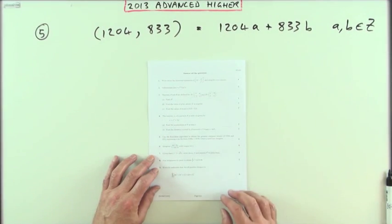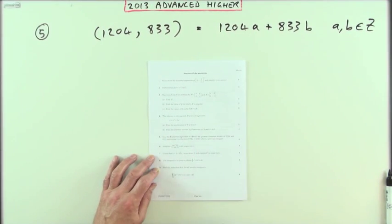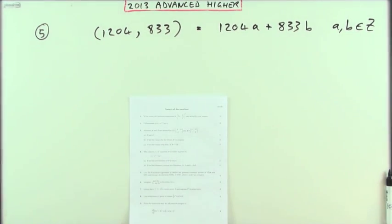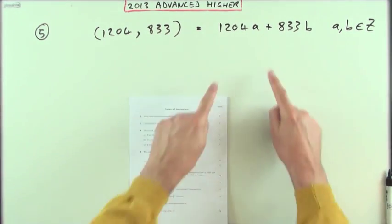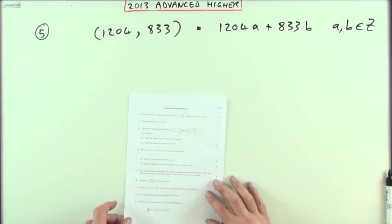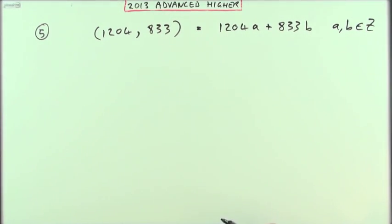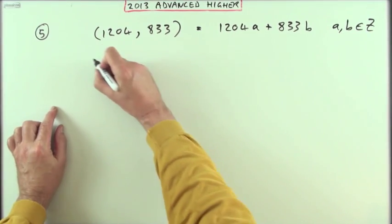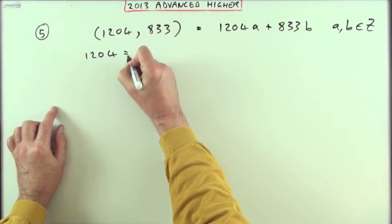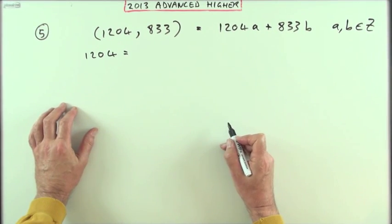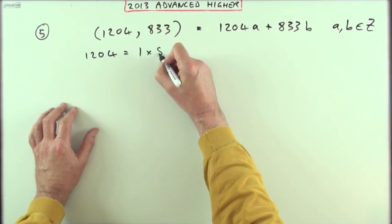Number five from the 2013 Advanced Higher Maths: use the Euclidean algorithm to obtain the greatest common divisor of those two numbers and express it in the form where a and b are integers. Well, the first part is to go through the Euclidean algorithm, so we're starting with 1204. How many 833s can we get? It'll only be one, so it's 1 times 833 with a remainder of 371.